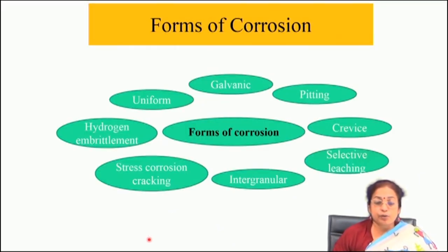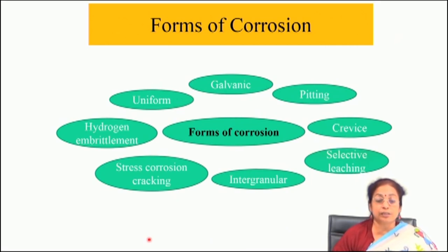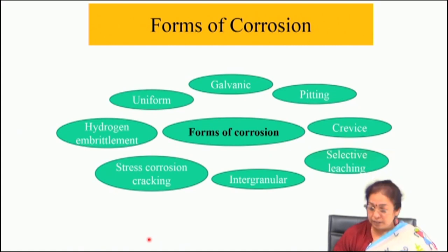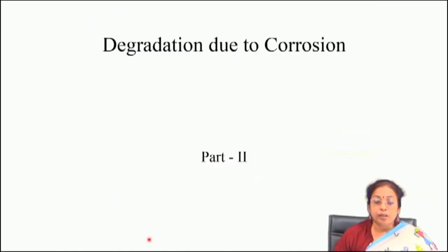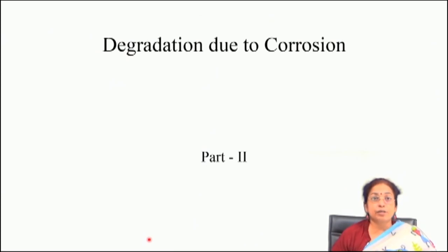It is very important to know which mode of corrosion occurs because depending on the mode, different preventive measures need to be taken. The different ways by which corrosion occurs are: uniform or general corrosion, galvanic corrosion, pitting corrosion, crevice corrosion, selective leaching, intergranular corrosion, stress corrosion cracking, and hydrogen embrittlement. In the next few slides, I will discuss the degradation of materials by these different types of corrosion.